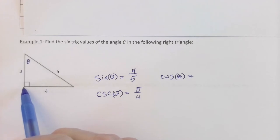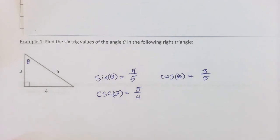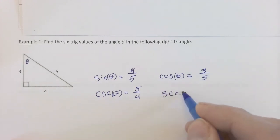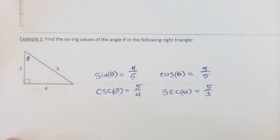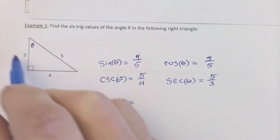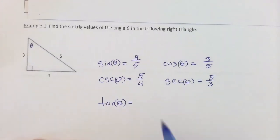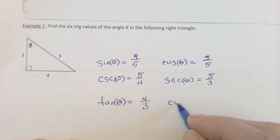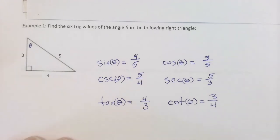Secant is the reciprocal of cosine, so sec(θ) = 5/3. For tangent, we don't use the hypotenuse at all — it's opposite over adjacent — so tan(θ) = 4/3. And cotangent is the reciprocal, cot(θ) = 3/4. We're doing trigonometry!